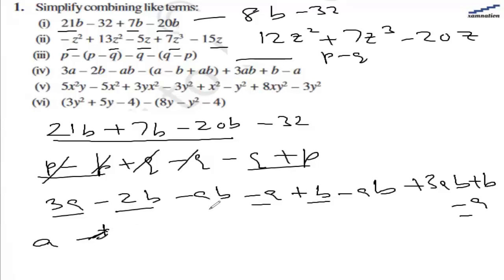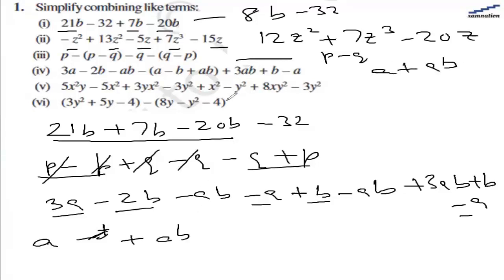Now let's combine the ab terms: minus ab minus ab and plus 3ab. The answer is a plus ab as the simplified form.